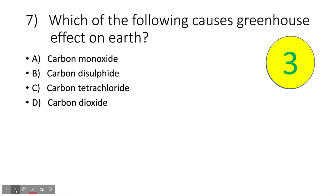Which of the following causes greenhouse effect on Earth? Greenhouse effect on Earth... Option D, carbon dioxide. Option D, carbon dioxide.